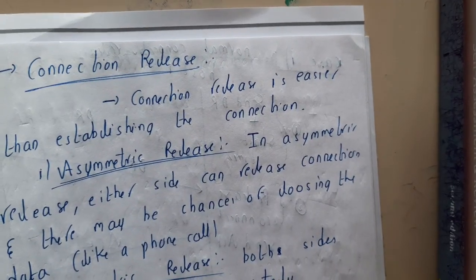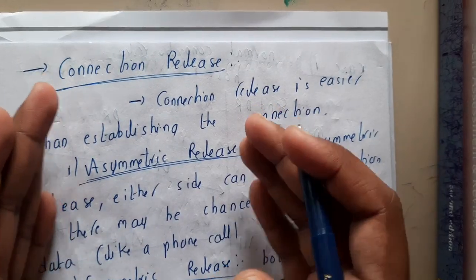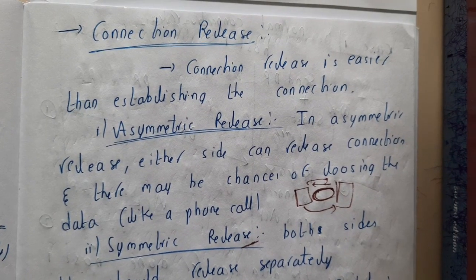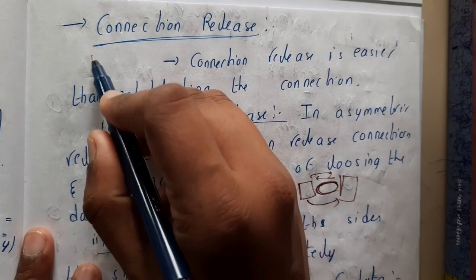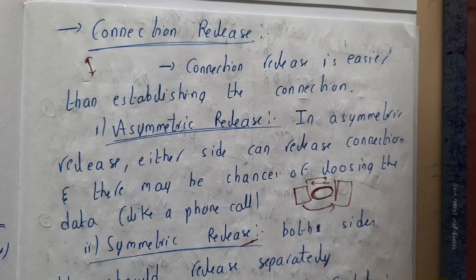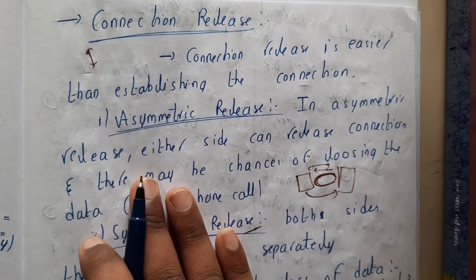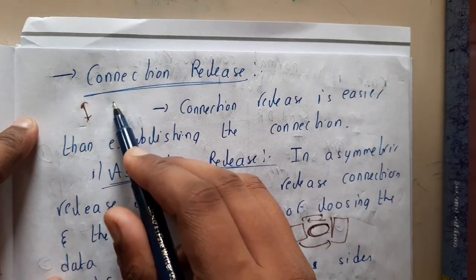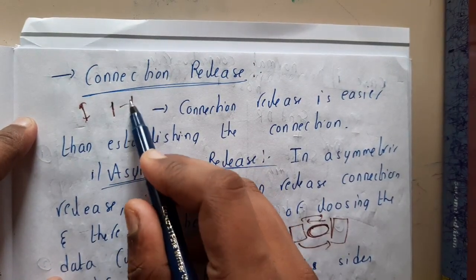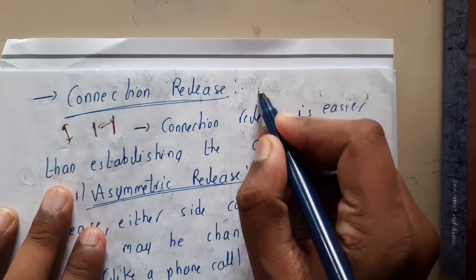Once connection is established, data can be transferred smoothly. Now let us discuss how connections are released. After your whole transmission of data is done, you want to terminate or release the connection. The reason we perform a proper release is that we don't know whether the server or client is still requesting data, so we need confirmation.